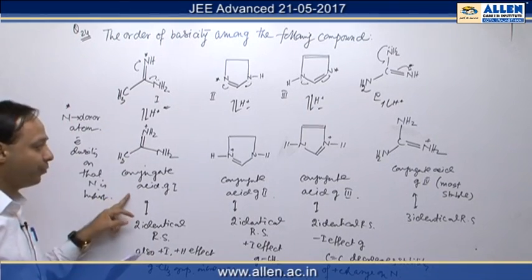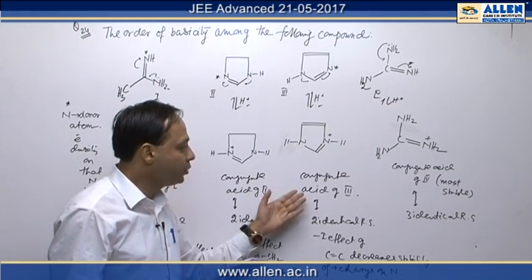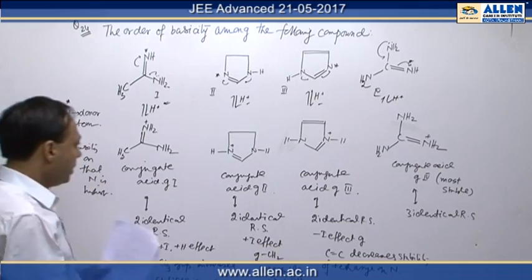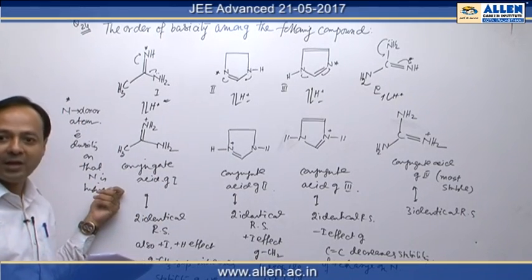It is written over here, conjugate acid of 1. It is written over here, conjugate acid of 2. It is written over here, conjugate acid of 3 and conjugate acid of 4. Now let's start the comparison of stability of conjugate acid.